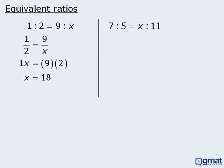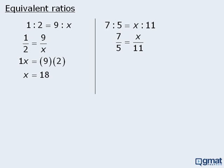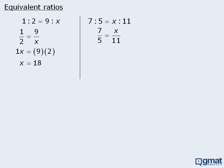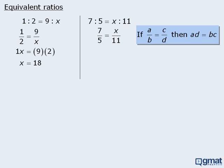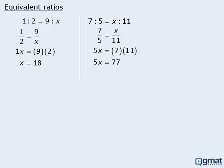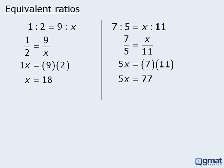Let's try another question. We rewrite the ratios using fraction notation and apply the cross-multiplication rule to get the equation. When we simplify the right-hand side and divide both sides by five, we get x equals 77 over five, which we can also rewrite as 15.4. So the ratio seven to five is equal to the ratio 15.4 to 11.